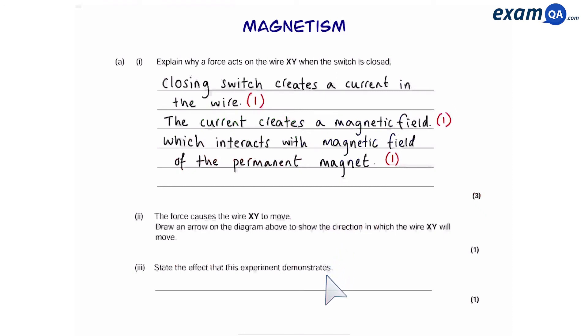State the effect that this experiment demonstrates. Whenever you have a wire that moves because it's inside the magnetic field, this is called the motor effect.